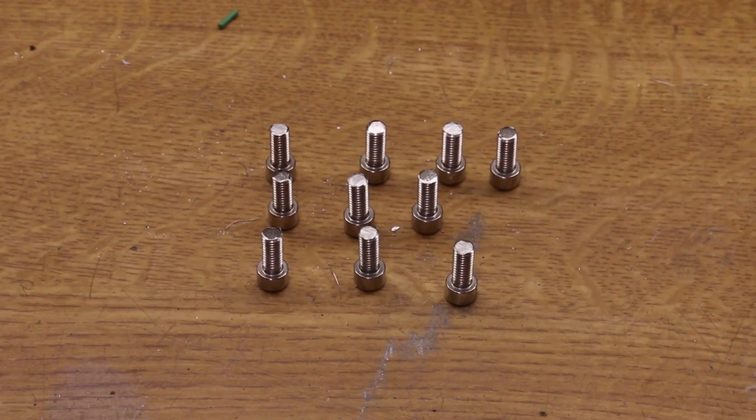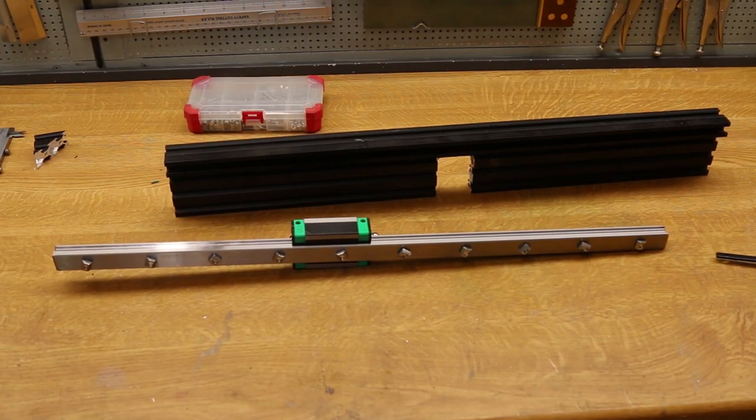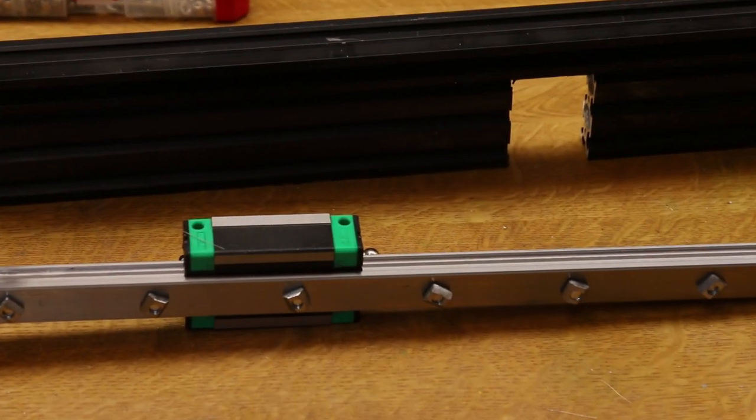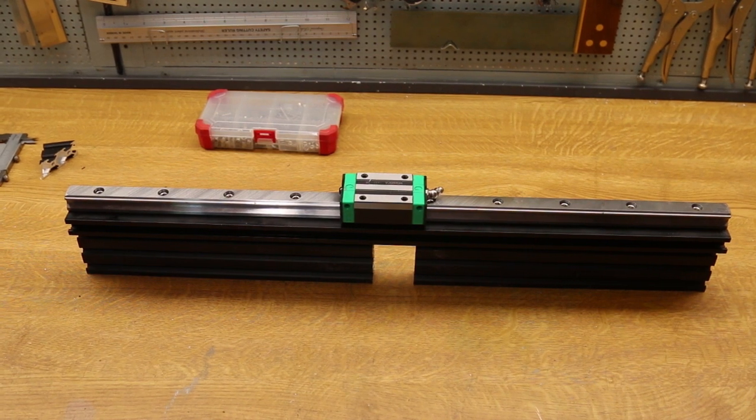The fifteen millimeter bolts turned out to be fifteen and a half, so a bit more filing. With the bolts in place, it can now be slid into the rail. The rail certainly adds to the rigidity of the fence.